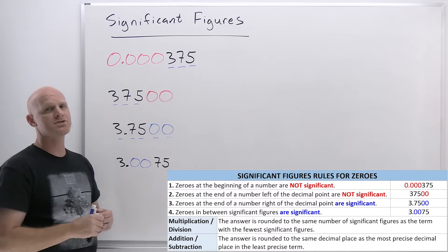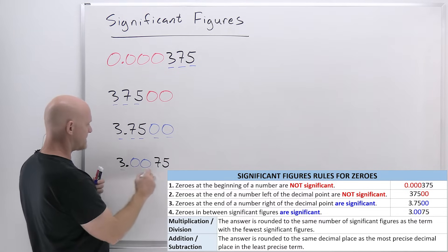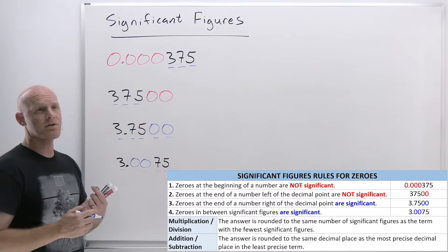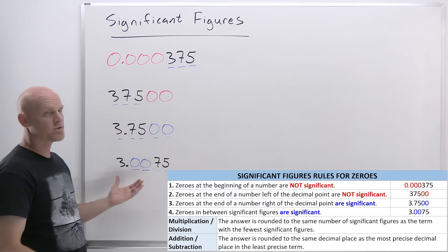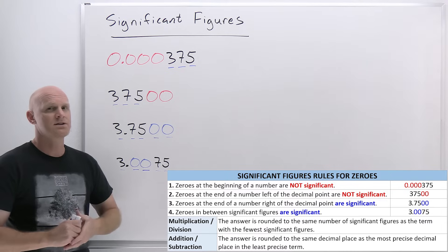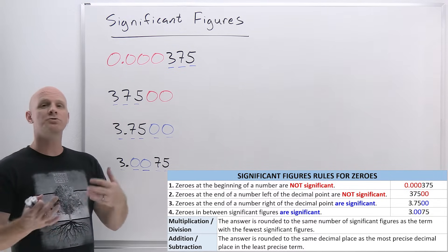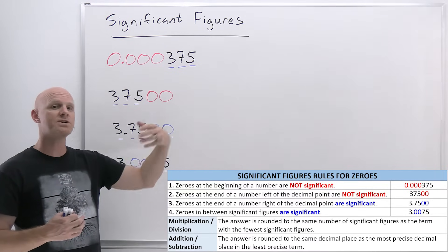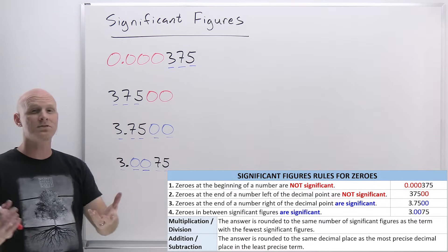The last rule deals with zeros that are surrounded by significant figures. We know we've got significant figures here, here, and here, so these zeros are surrounded. Zeros that are surrounded by other significant figures are themselves significant. That last example also has five significant figures. So now we know how to assign the zeros, and we're getting prepared to do some mathematical operations.